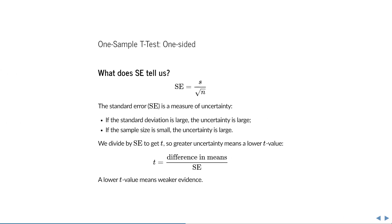What does the standard error actually tell us? The standard error is a measure of uncertainty. In the numerator we have the standard deviation, which is the extent to which observations differ from the mean. If this value is large, then the uncertainty is also large. In the denominator we have the square root of the sample size, and if we divide by a small number — so if the sample size is small — then the uncertainty is also large.